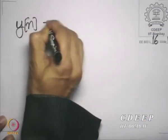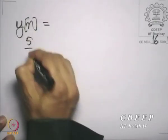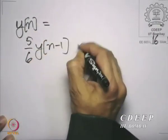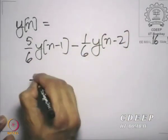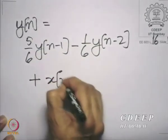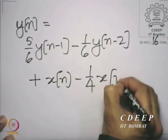Let us look a little more at rational systems, and specifically at the linear constant coefficient difference equation. We have a linear constant coefficient difference equation. Let us take, for example, the one we had a minute ago: y[n] = (5/6)y[n−1] − (1/6)y[n−2] + x[n] − (1/4)x[n−1].